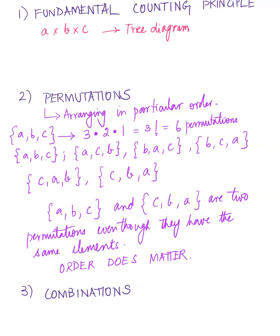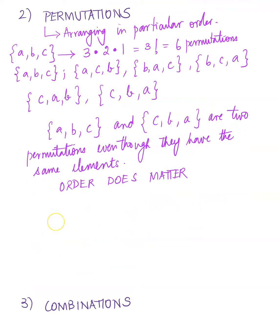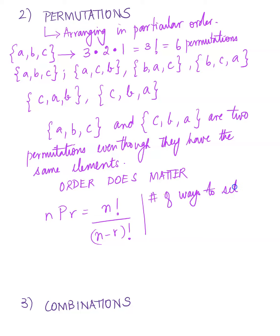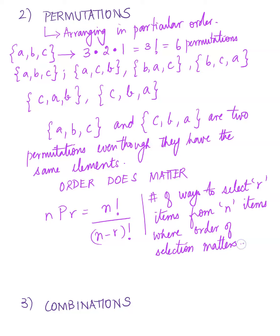Permutations have a special formula: NPR = N! / (N−R)!, where you are finding the number of ways to select R items from N items where the order does matter. You can compute this in your calculator — in your graphing calculator, click the math button, go to the PRB tab, choose the second option NPR. Enter the N value first, then select the NPR key, then enter the R value.